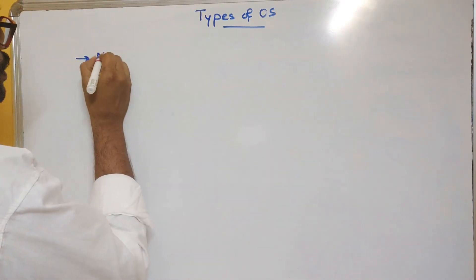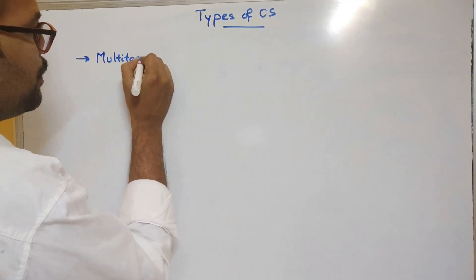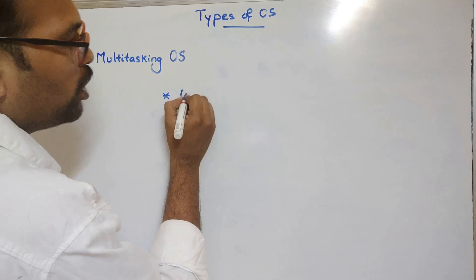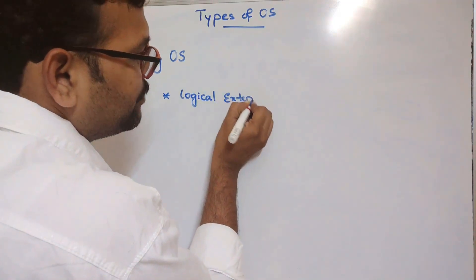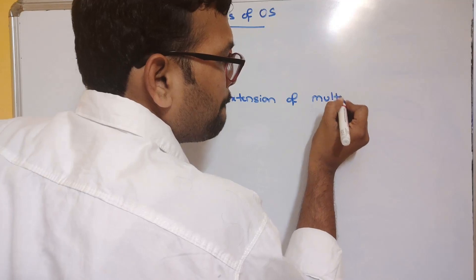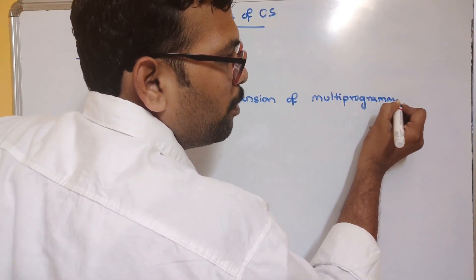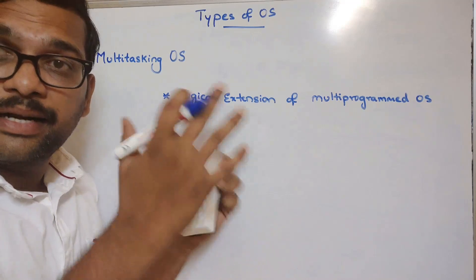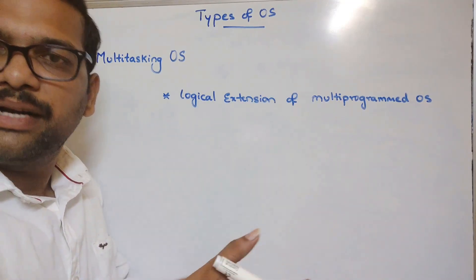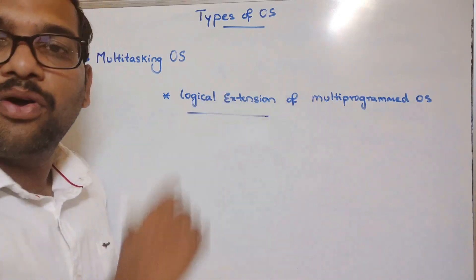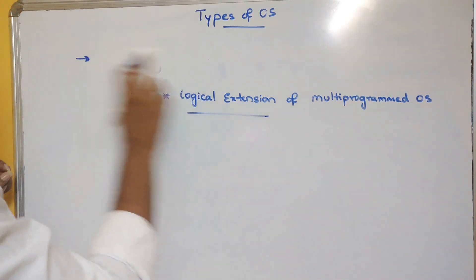The next one is the multi-tasking operating system. It is nothing but a logical extension of the multi-programmed operating system. Multiple tasks are given to the same CPU and it executes them concurrently, so there is no CPU idle state. That is why we call it a logical extension of the multi-programmed operating system.